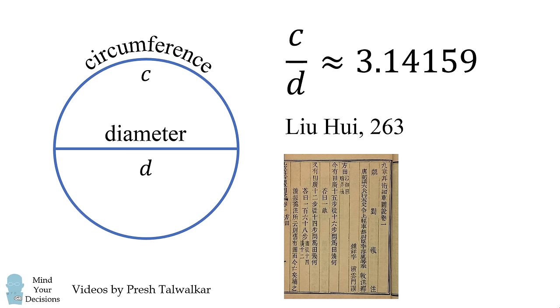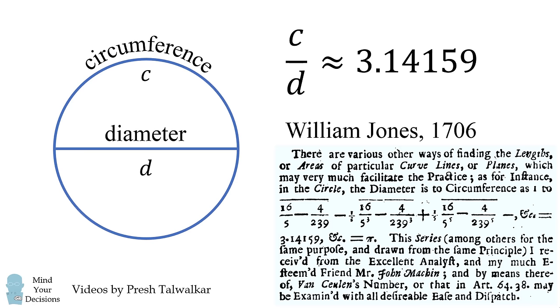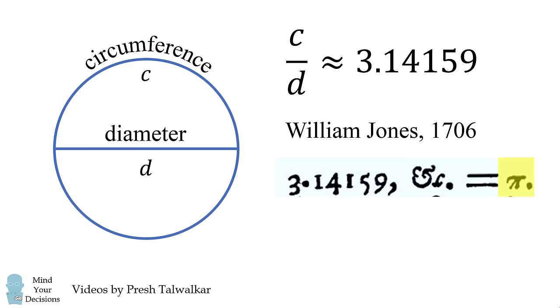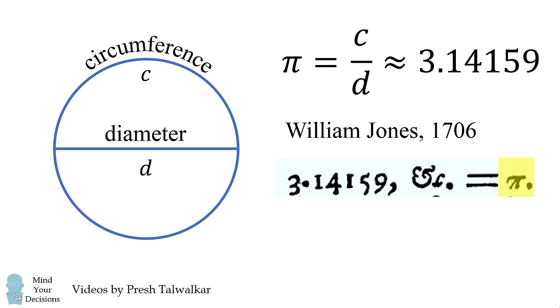Now what you might find curious is that these papers do not use the modern-day symbol of pi as we know it to represent this ratio. This is actually a very recent use of the symbol pi. It started in 1706 with William Jones, and it spread throughout Europe and the rest of the world only in the last 300 years.